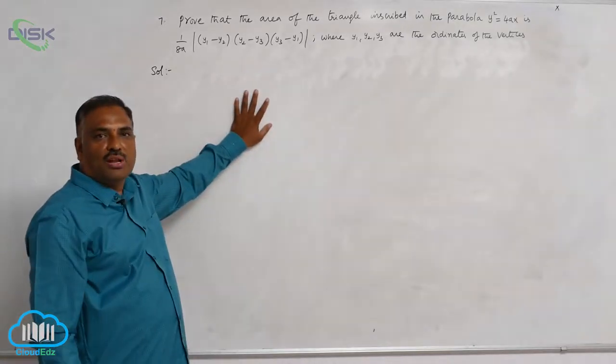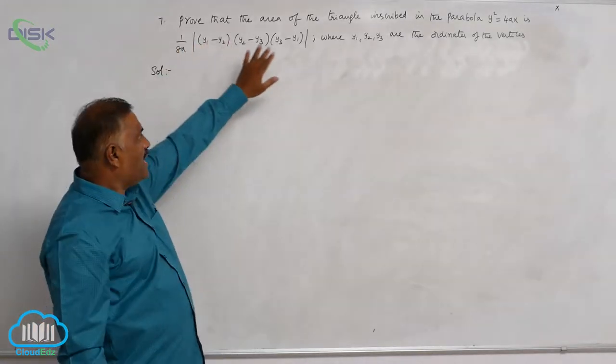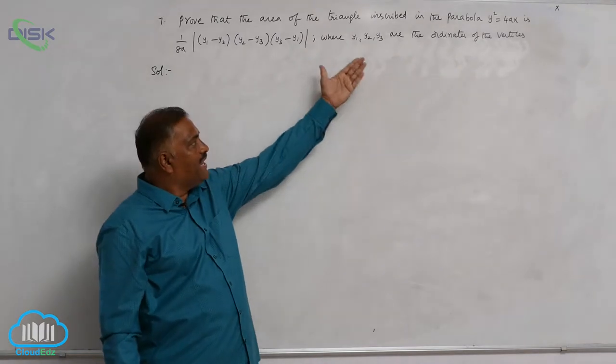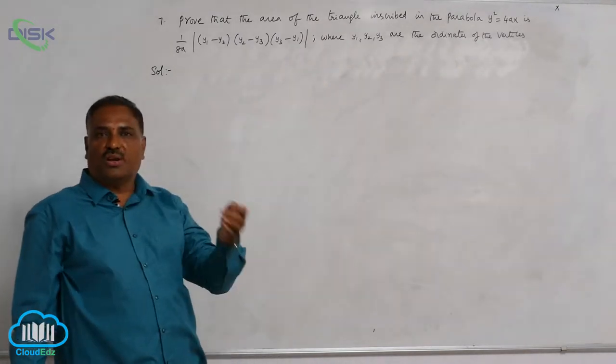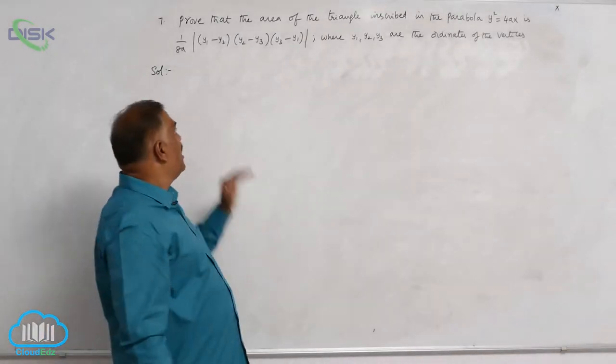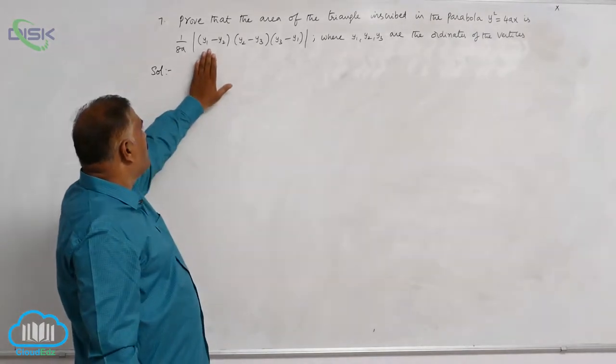Let us discuss one more important problem. Prove that area of the triangle inscribed in the parabola y² = 4ax is 1 by 8a modulus